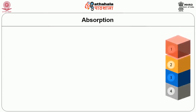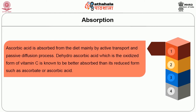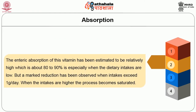Moving on to its absorptive mechanism. Ascorbic acid is absorbed from the diet mainly by active transport and passive diffusion processes. Dehydroascorbic acid, which is the oxidized form of vitamin C, is known to be better absorbed than its reduced form such as ascorbate or ascorbic acid. The enteric absorption of this vitamin has been estimated to be relatively high, about 80-90%, especially when dietary intakes are low. But a marked reduction has been observed when intakes exceed 1 gram per day. When intakes are higher, the process becomes saturated.